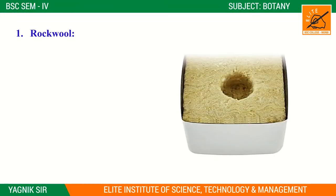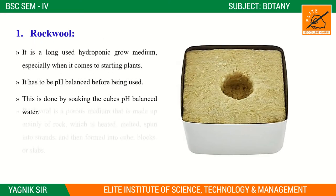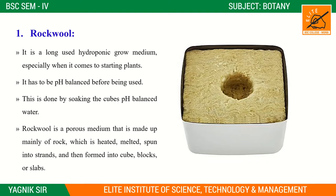So let's start one by one. First is rock wool. Rock wool is a common growing medium and it has been used for a very long time. Especially, it is used for starting plants, and it has to be pH balanced before being used.